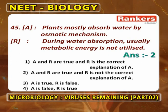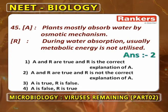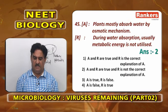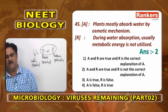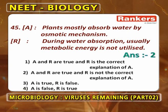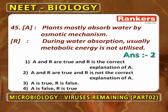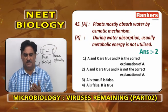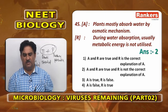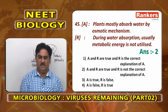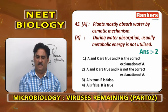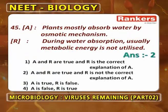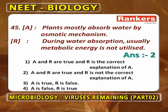Plants mostly absorb water by osmotic mechanism — this is correct. During water absorption, metabolic energy is not utilized — this is also correct, because it is passive absorption through osmotic mechanism. However, as metabolic energy is not utilized during water absorption, that does not explain why plants mostly absorb water by osmotic mechanism. So A and R are correct, but R is not the correct explanation of A. Second option.